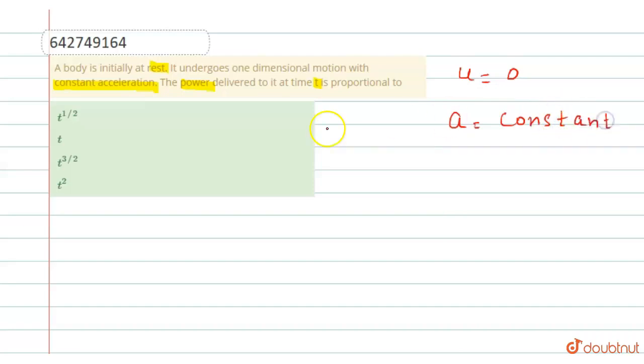Now, we know that v is equal to u plus at. In this u is equal to 0. So, we get v is equal to at in which acceleration is constant.